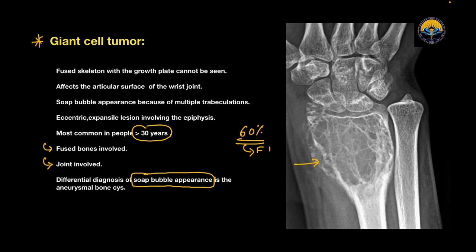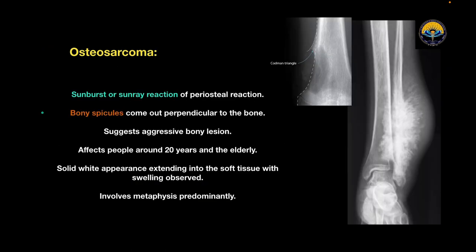Giant cell tumors involve fused bones and the articular surface, and the differential diagnosis for soap bubble appearance is aneurysmal bone cyst. Now, osteosarcomas are malignant bone-forming tumors — the second most common primary bone tumor after multiple myeloma, accounting for about 20% of all primary bone tumors. Typical appearances include medullary and cortical bone destruction, a wide zone of transition, and moth-eaten appearance. There is an aggressive periosteal reaction of sunburst type, Codman's triangle, and onion skin appearance. This tumor affects people around 20 years and the elderly, and the patient may present with spontaneous pneumothorax due to lung metastasis.